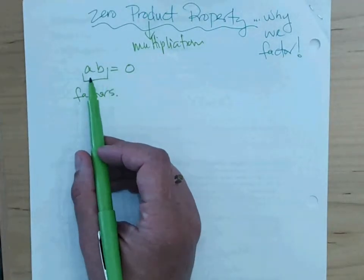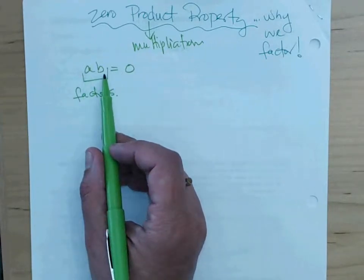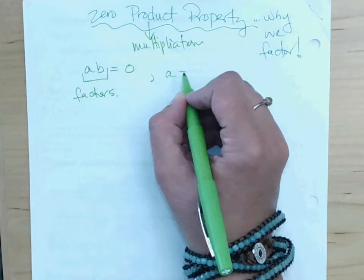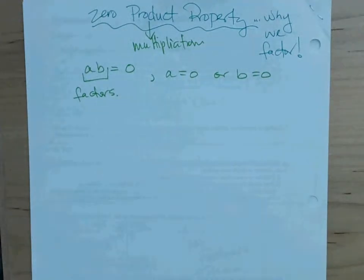If you know that two numbers are multiplying together to give you zero, do you know anything about either one of those numbers? What do you know? Yeah, A could be zero or B could be zero or they could both be zero, but that's the only number that this works for.